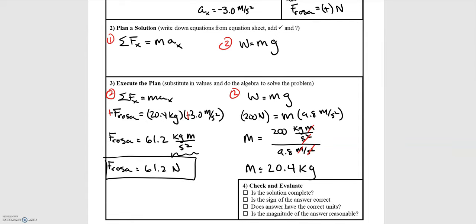Whenever you're asked for the size or how large a force is, you'll always get a positive value, because they're asking for the magnitude of the force. The magnitude is always positive. The direction came in when we placed the negative sign because the force was pointing to the left — that negative sign represents direction. The quantity F Rosa itself is our magnitude, which is a positive value.